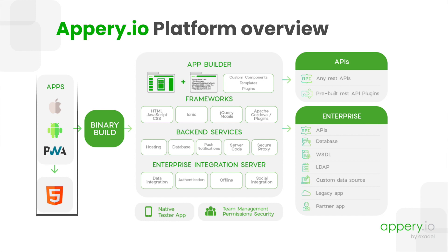Let's start with the graphics on the left, where you can see what kind of apps can be built with our platform. First of all, you can build hybrid mobile web apps for both iOS and Android, which will run directly in the browser via our visual app builder. These are Cordova apps that can take HTML, JavaScript, CSS or whatever resources and put them inside a native wrapper using Apache Cordova to build an app for iOS or Android.